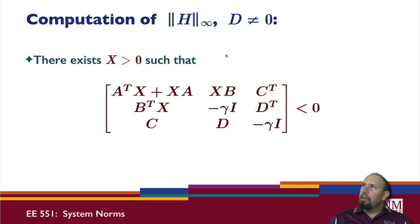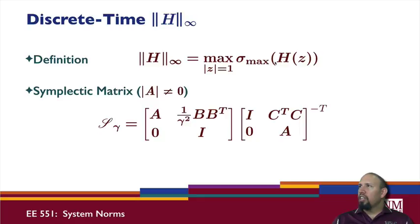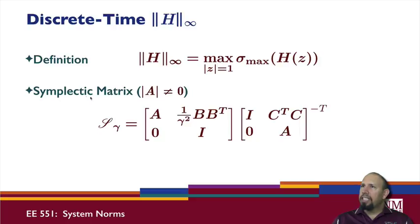This is the computation of the H-infinity norm, which is the L2-induced norm in continuous time. For the little-l2-induced norm we have the problem in discrete time. In discrete time, the H-infinity norm is the maximum over all z of magnitude 1 of the largest singular value of H of z. In the same way that in continuous time we had a Hamiltonian matrix, in discrete time we have a symplectic matrix.